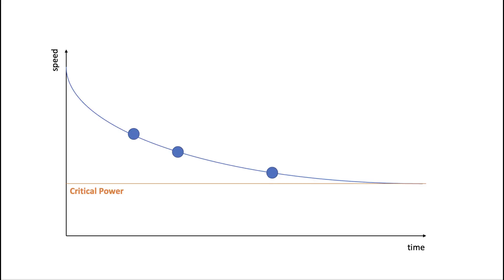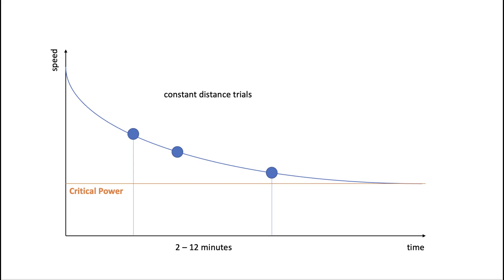The test does not follow a fixed protocol. However, experts recommend at least three trials that should last between 2 and 12 minutes in duration. Furthermore, constant distance trials have proven to be more reliable than time to exhaustion trials. In general, the critical speed test is considered a valid method to predict running performances.